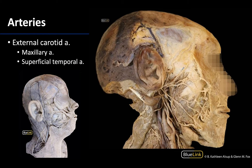The maxillary and superficial temporal arteries are the terminal branches of the external carotid artery, so it will stop here. The maxillary artery is going to be considerably larger than the superficial temporal, but we can only see a very small portion right here. You can only see a small portion because we would have to do a much deeper dissection — like we'll see in the infratemporal fossa — to see the bulk of the maxillary artery. We're going to spend considerable time on this because it's really important in terms of supplying the deep face region.